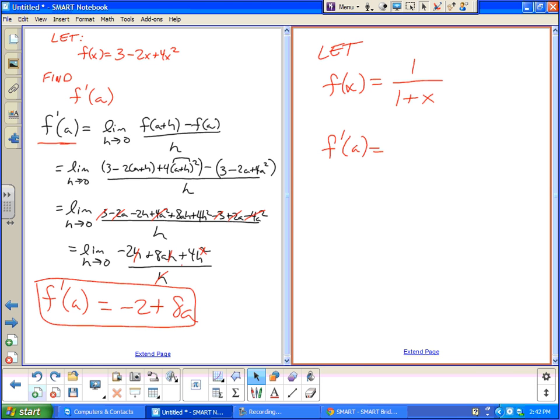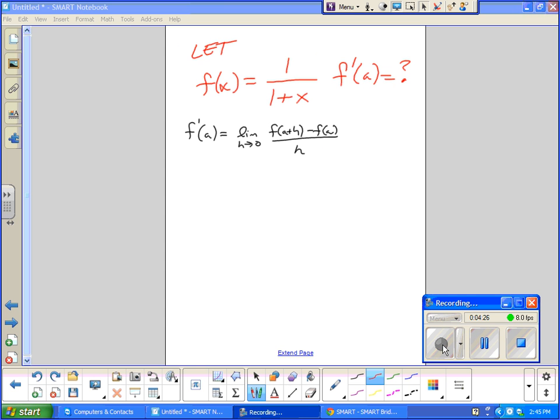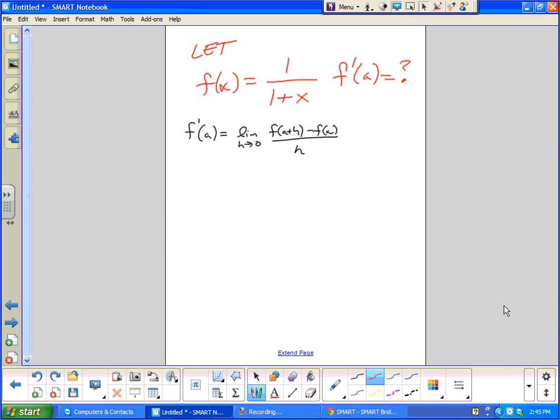And again, this takes a lot more algebra to work through, guys. So, we're going to try to find the derivative of this rational function. It's domain is all real except negative one. It's range is all real except zero. The reciprocal function shifted. It's rational.